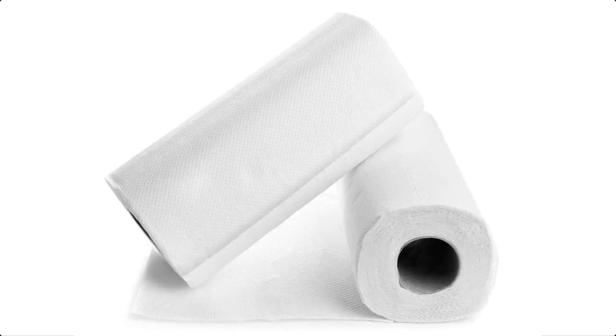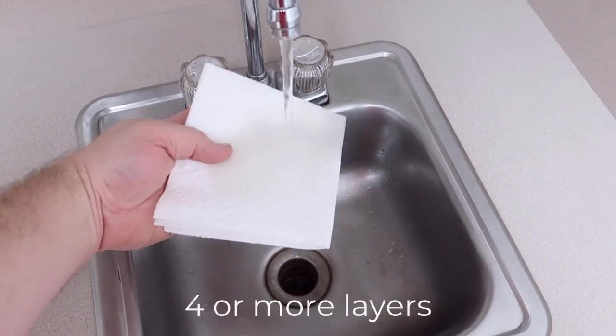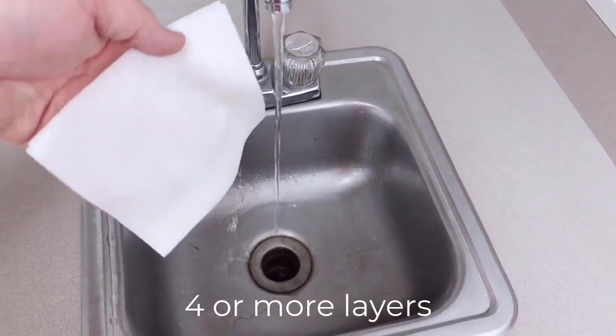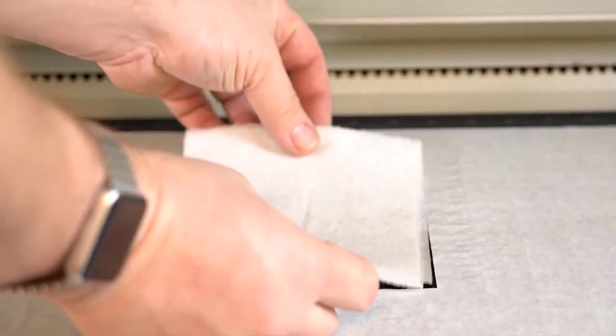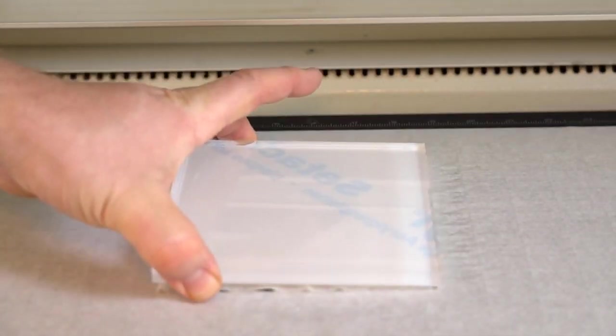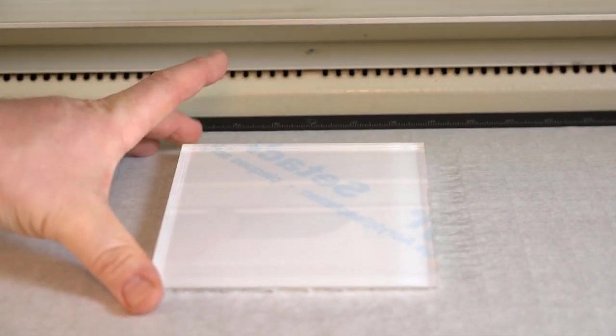For this laser hack we are going to use common household paper towels. First, take four or more layers of folded paper towels and wet them down with water. Now place the wet paper towels onto the surface of the vector cutting grid and place the acrylic onto the wet paper towels.